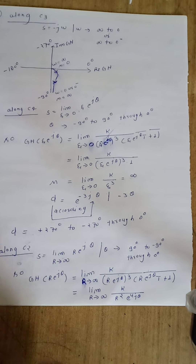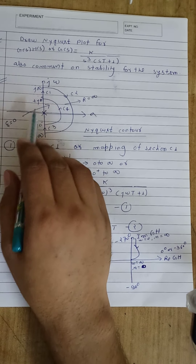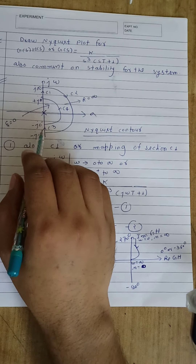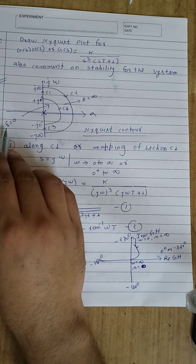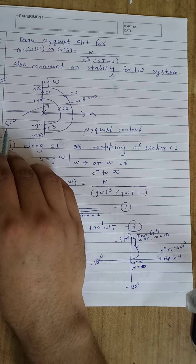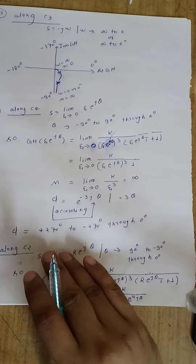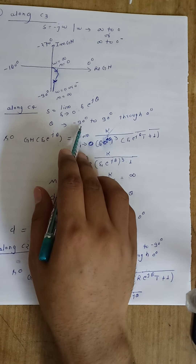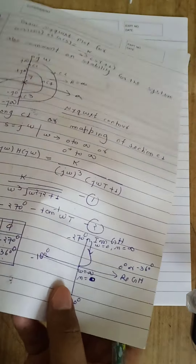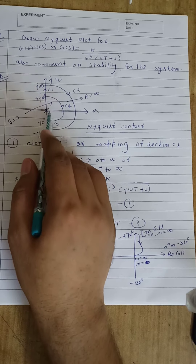Now let us see section C4. Along section C4, we have a small semicircle of zero radius — considering radius as epsilon. For section C4 we can write s equal to the limit as epsilon tends to zero of epsilon times e to the j-theta, and theta will vary from minus 90 to plus 90 through zero degrees. Because it will cross the zero degree line, along C4 the phase angle will vary from minus 90 to plus 90 through zero degrees.